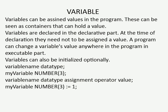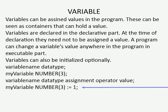Below are examples of how to declare variables. In the first example we are providing variable name and data type. In the second example we are assigning a value to the variable at the time of declaring it — this is called initialization of a variable: variable name, data type, assignment operator, and value.